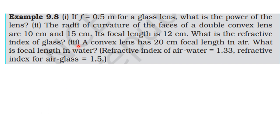From the NCERT textbook, from the topic of optical instruments, we are doing example 9.8. Problem one: if focal length equals 0.5 meter for a glass lens, what is the power of the lens? Problem two: the radius of curvature of the faces of a double convex lens are 10 cm and 15 cm, its focal length is 12 cm — what is the refractive index of the glass? Problem three: a convex lens has 20 cm focal length in air, what is the focal length in water if refractive index of water is 1.33 and refractive index of glass is 1.5?